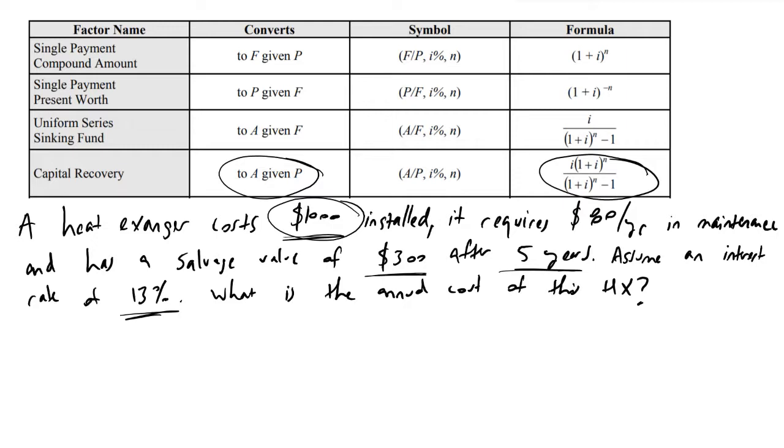And so the annual cost, I'll denote it AC, will be equivalent to $1,000 times this factor here where we have I times 1 plus I raised to the N over 1 plus I raised to the N minus 1. And I here is this 13% value and N is the number of years. So we've got five years of service that we are interested in determining our annual cost in. Okay, so we're gonna be spending a thousand bucks up front. We're normalizing this into an annual cost value.